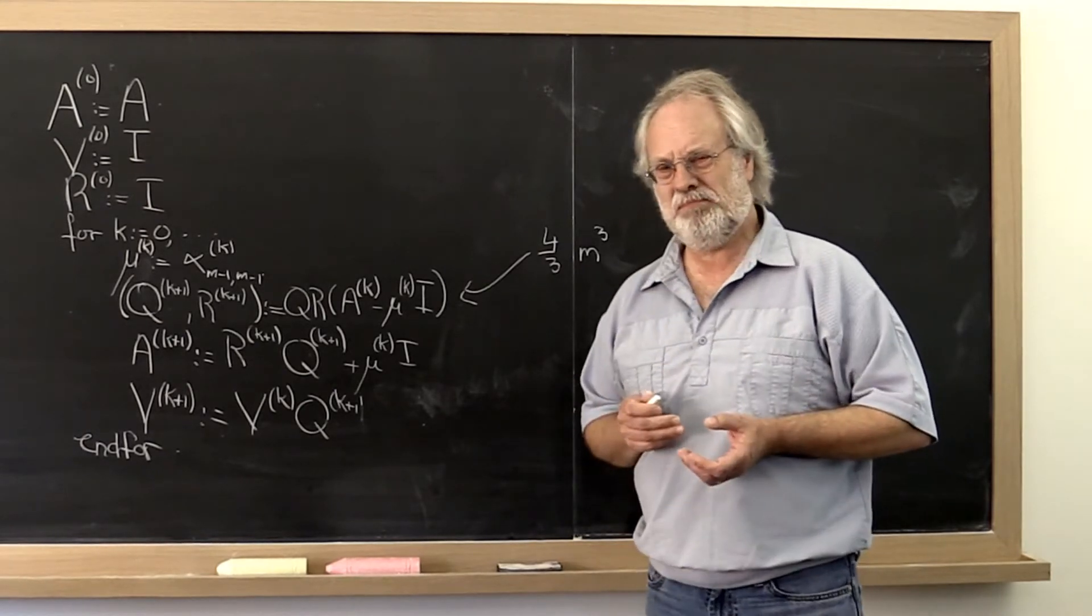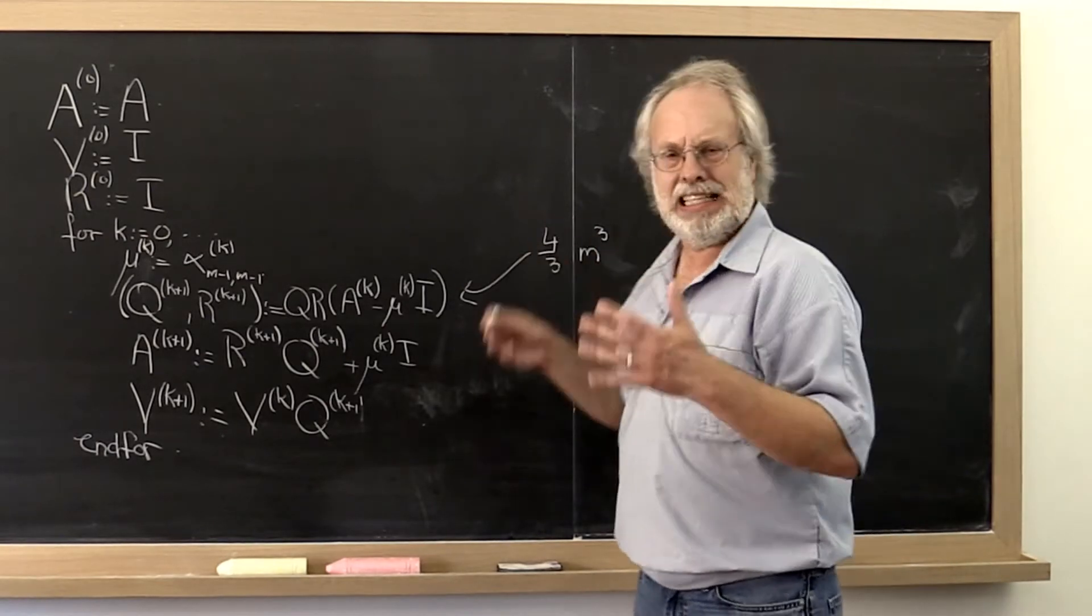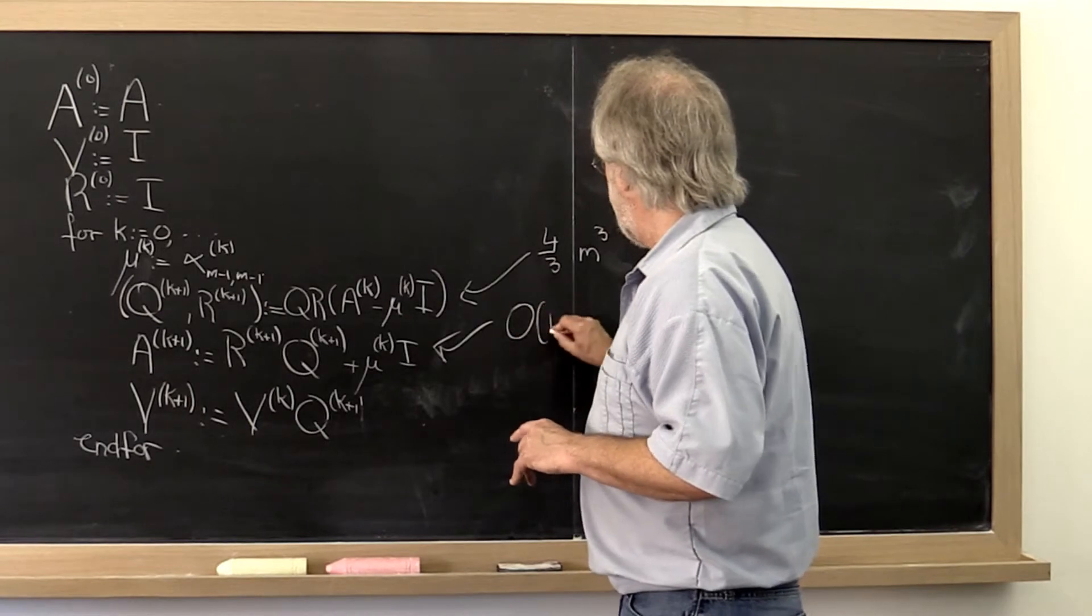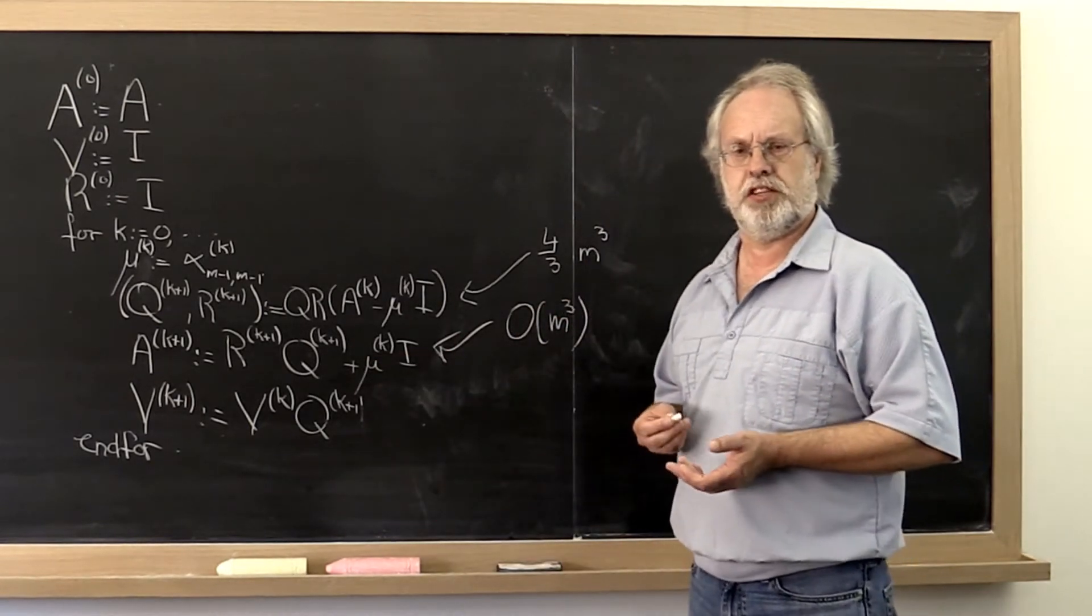But actually it's really hard to analyze. So let's just cheat. Let's say this is some big O of m cubed, some constant times m cubed, roughly speaking.